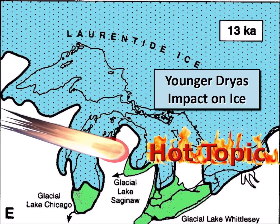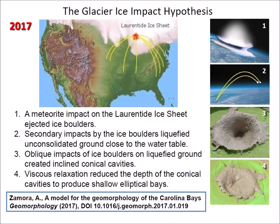The Younger Dryas impact on ice is a hot topic that has been vigorously contested by opponents of the impact hypothesis. In 2017, the Glacier Ice Impact Hypothesis was published in the peer-reviewed journal Geomorphology.